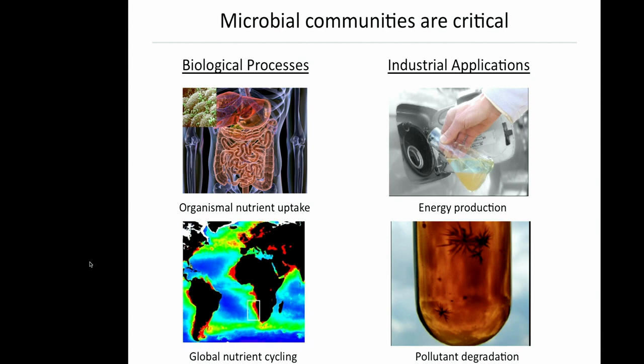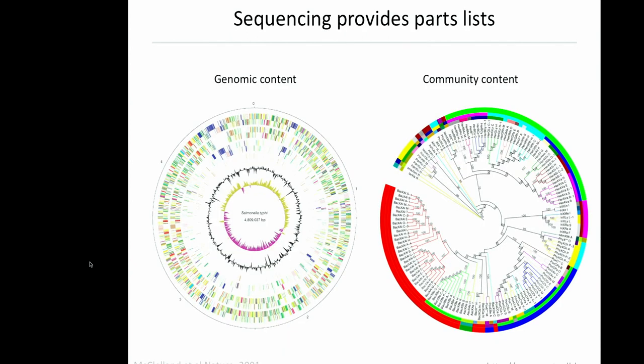We'd like to predict how those emergent properties will change through time, and ultimately we'd like to be able to manipulate both the composition and function of microbial communities. Sequencing tools are obviously giving us some really powerful approaches for confronting this challenge. We're now getting parts lists at the level of both the single genome and the microbial community — the list of all the genes that make up a single organism, and the list of all the species that exist within the community.